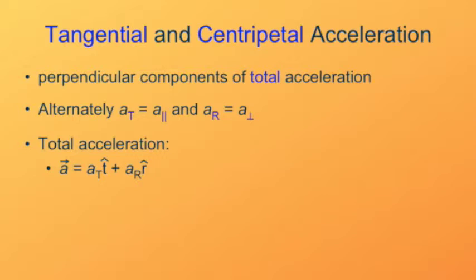The tangential acceleration uses the unit vector in the tangential direction, plus the radial acceleration in the radial direction — that's what the r-hat vector refers to, it's the radius vector. Now strictly speaking, the radius vector points outward from the center to the object, and the radial acceleration, the centripetal acceleration, is in the opposite direction.